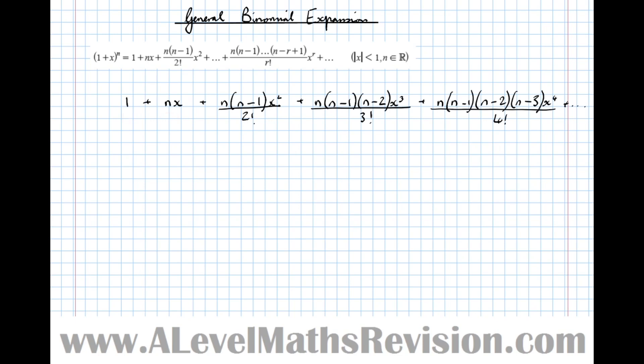What doesn't look like these two have denominators, why does the denominator start here? Well actually we just haven't written the denominator because that one's 1 factorial and that one's 0 factorial. So we can see the pattern better if we write it in full like that: 0 factorial, 1 factorial, 2 factorial, 3 factorial, 4 factorial and so on.